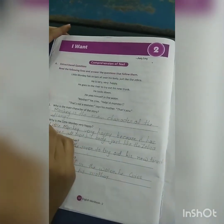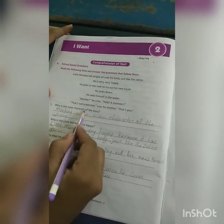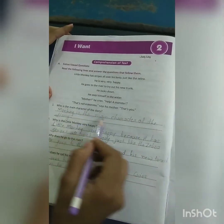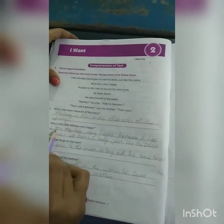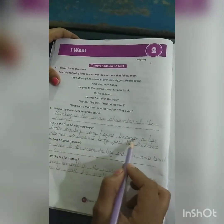Write down the exercise. Question number 1: Who is the main character of the story? Monkey is the main character of the story. Why is the little monkey very happy? The little monkey is very happy because it has stripes all over his body, just like the zebra.